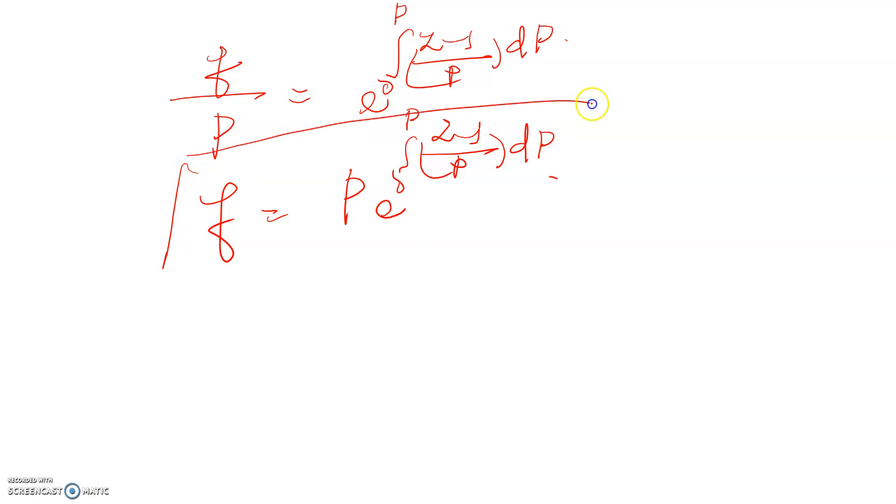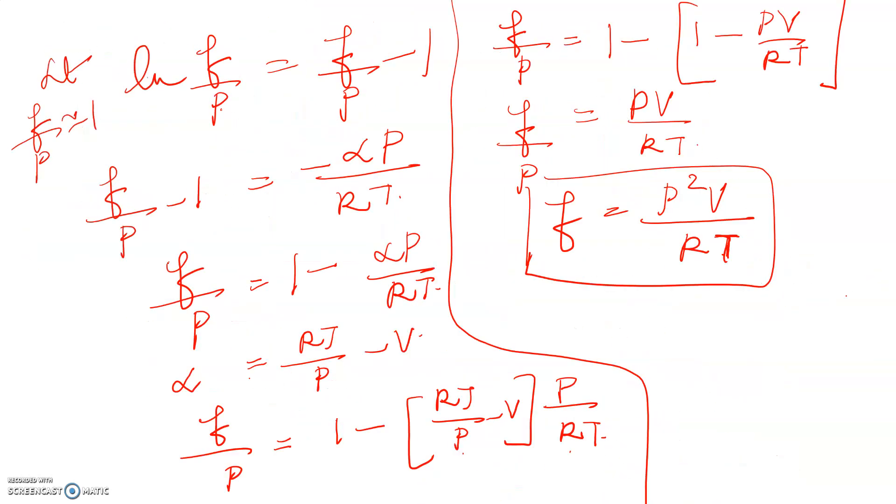This is how you can calculate f without the graphical method. So now we have seen the graphical method for the determination of fugacity. The approximation method gives you f is equal to P square V by RT.